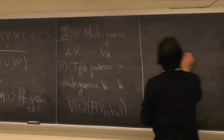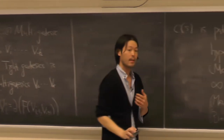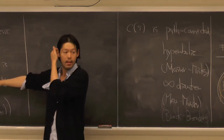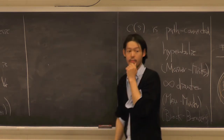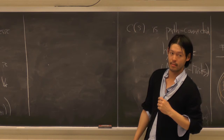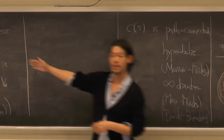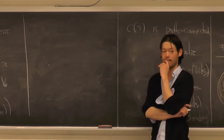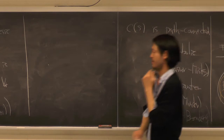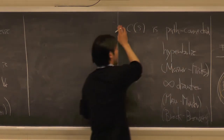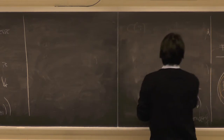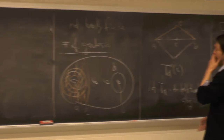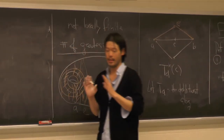I want to get a finiteness statement. Masur-Minsky showed that there exists at least one tight geodesic given any two points in the curve complex, and they also showed there are finitely many. Let me define the time-i slice: the set of elements in the curve complex such that the element lies on some tight geodesic between x and y, and is distance i from x. Bowditch shows that the slice is bounded, and not only that — this slice is actually bounded where the bound only depends on the surface.